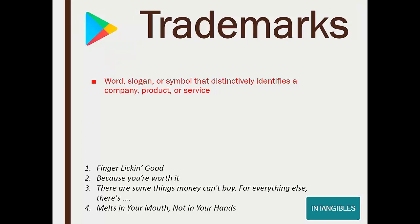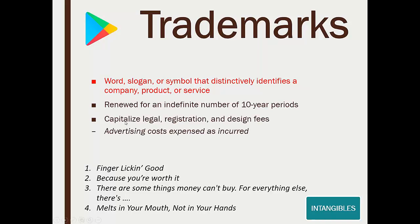A trademark is a word, slogan, or symbol that identifies a company's product or service — like 'Finger Lickin' Good' for KFC or the Reebok logo. Trademark availability is renewed in 10-year increments indefinitely. If you purchase a trademark, legal registration and design fees are capitalized; advertising costs are expensed as incurred. Some memorable trademarks: 'Because You're Worth It' is L'Oréal, 'There are some things money can't buy, for everything else there's Mastercard.'